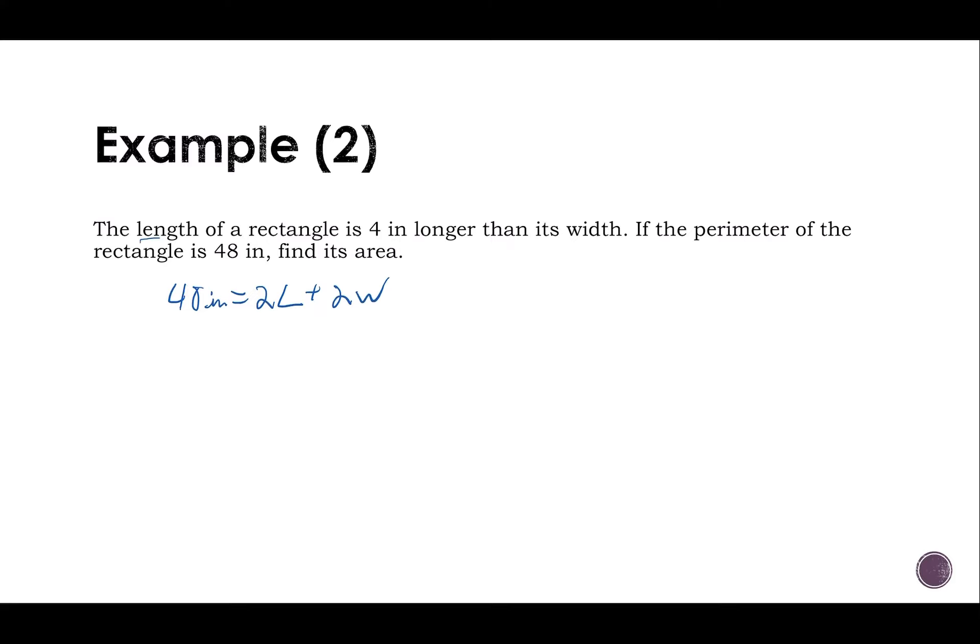And I know that the length of my rectangle is four inches longer than my width. So my length would be W plus four. And I can substitute this in for L to solve for W and then go back and solve for L. So I have 48 is two times W plus four plus two W.